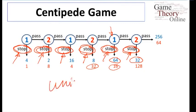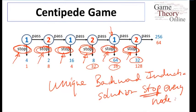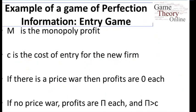So now we have a unique backward induction solution, which is stop at every node. We end up with something different from Nash equilibrium. In this case the outcomes are exactly the same — stopping at the first node — so the payoff predictions are the same. But the actual strategies are one of many Nash equilibria. This is a Nash equilibrium, but it's one of many. Now let's look at a slightly different game where we'll end up with different predictions between Nash and backward induction — where backward induction picks one of several Nash equilibria that allow for different outcomes in the game.